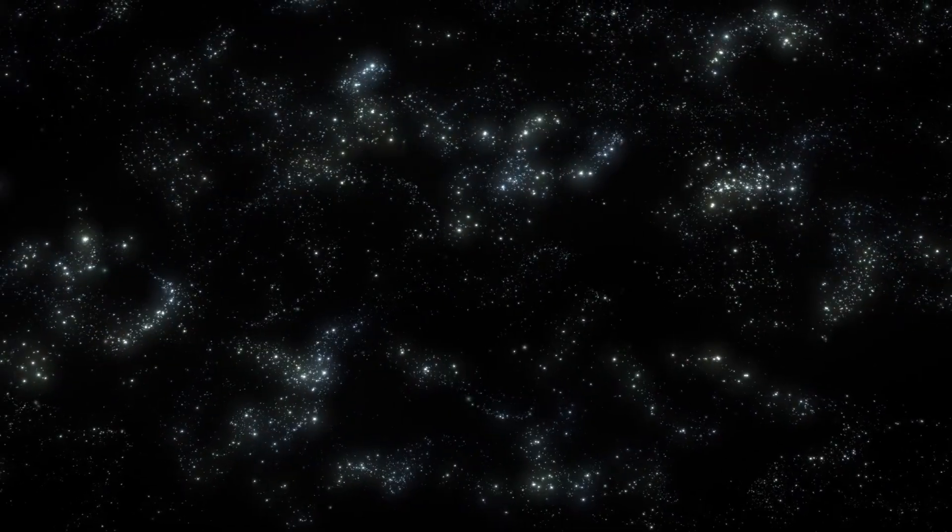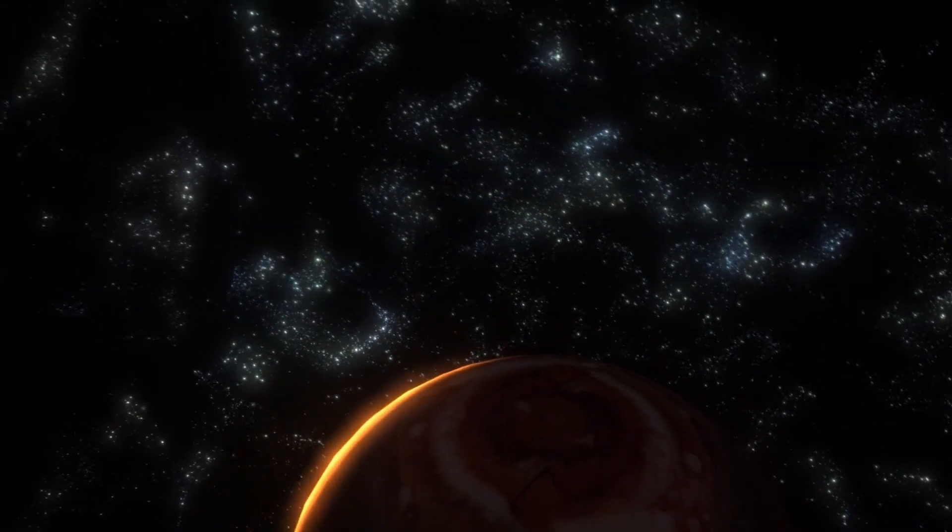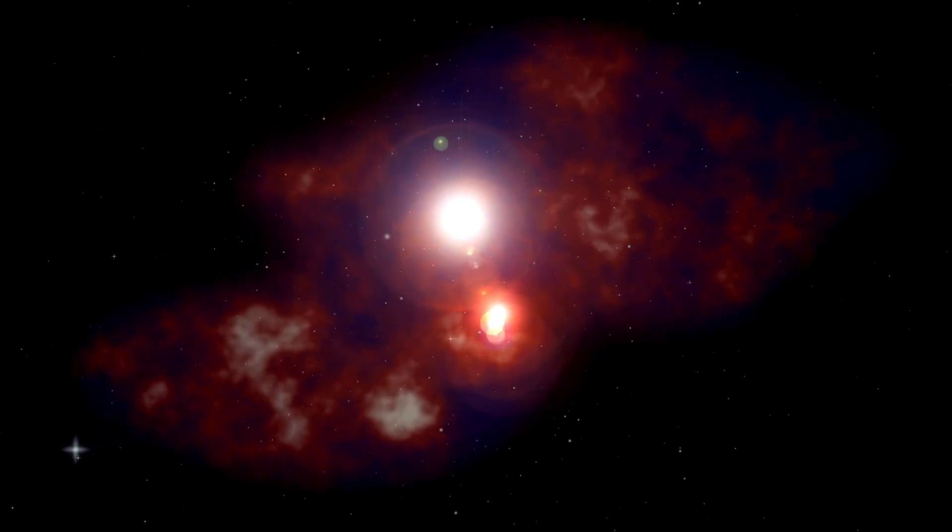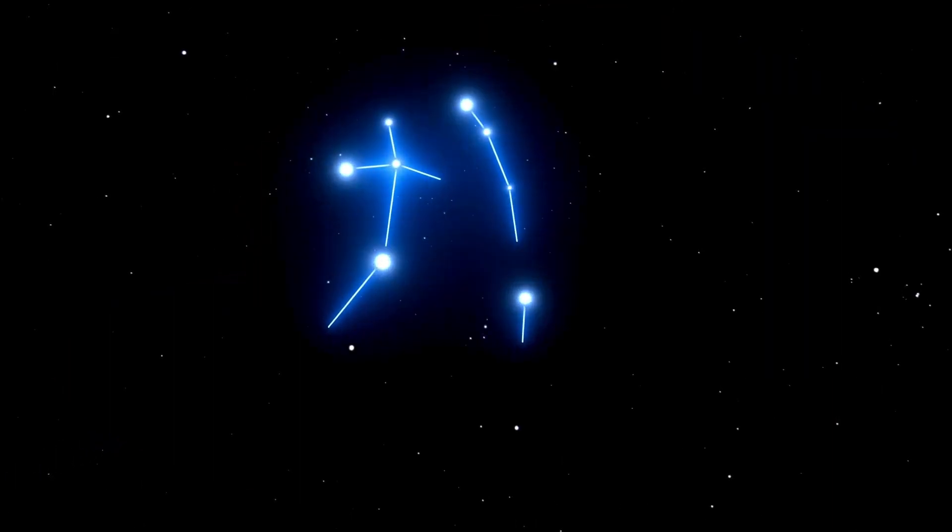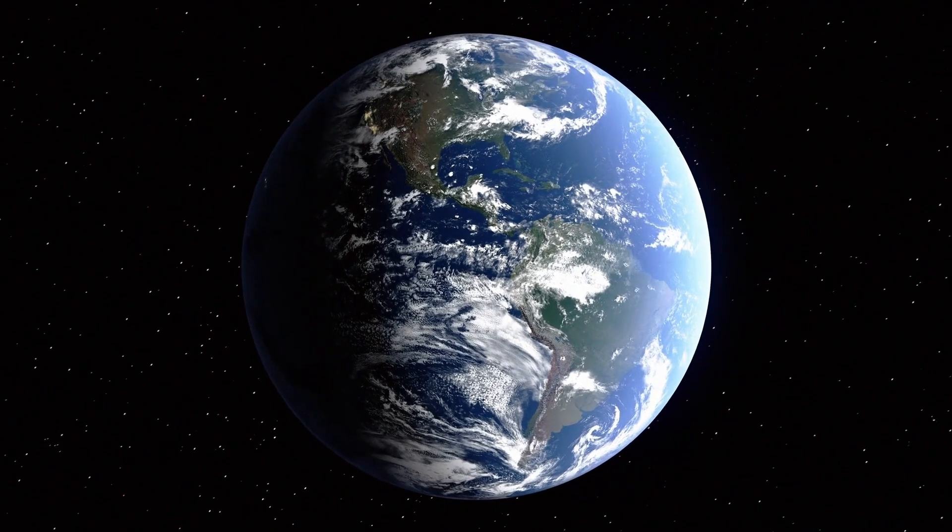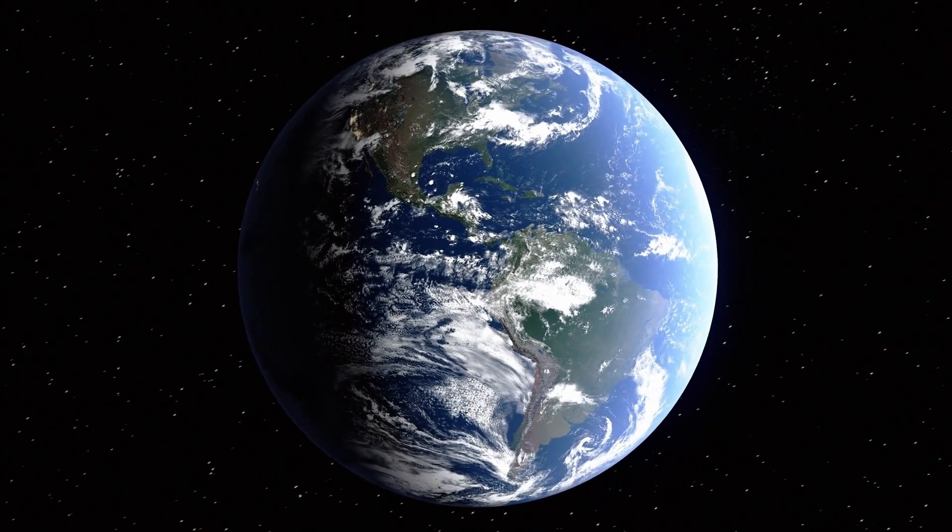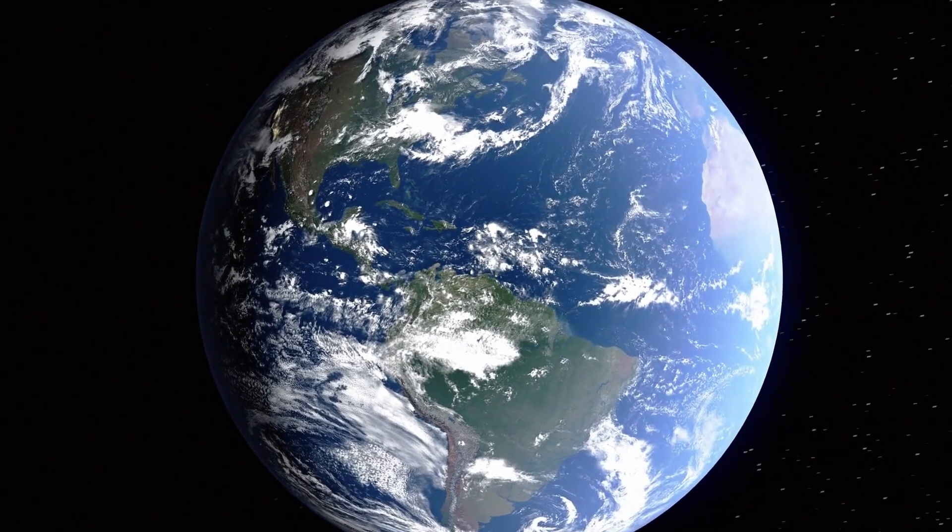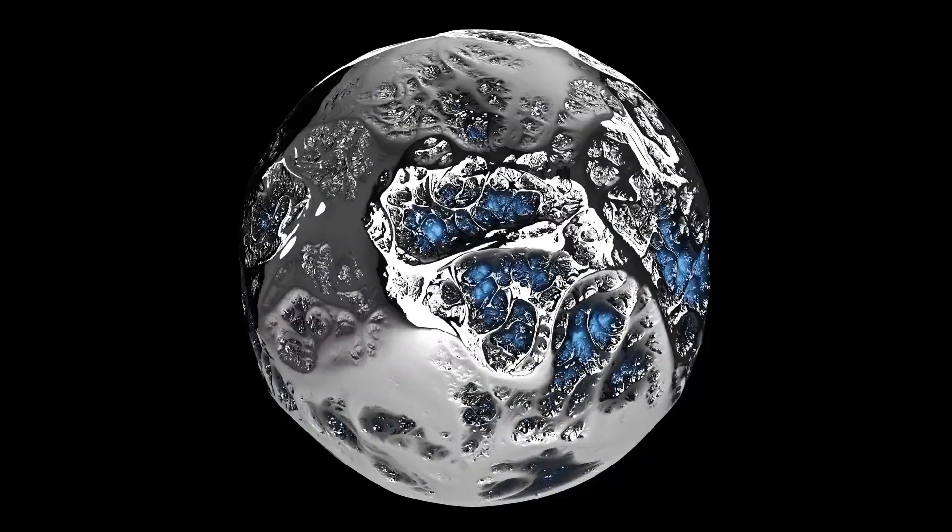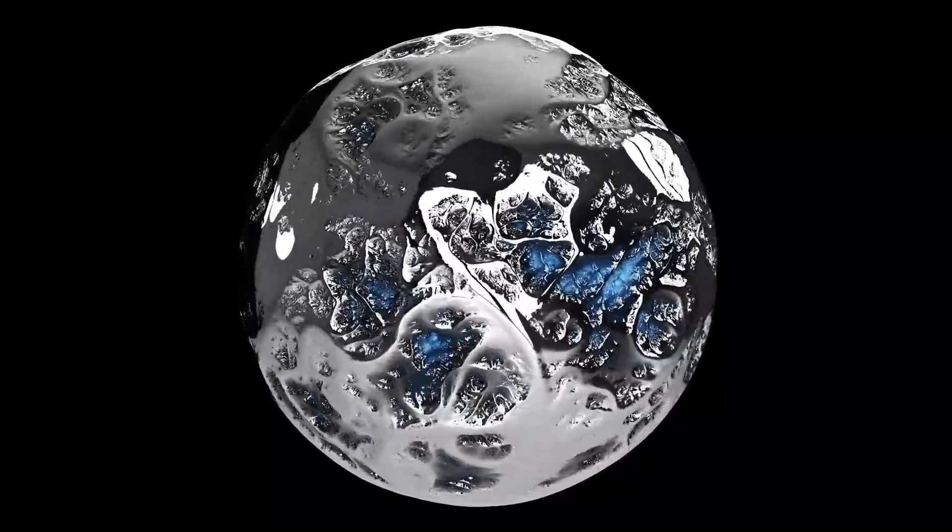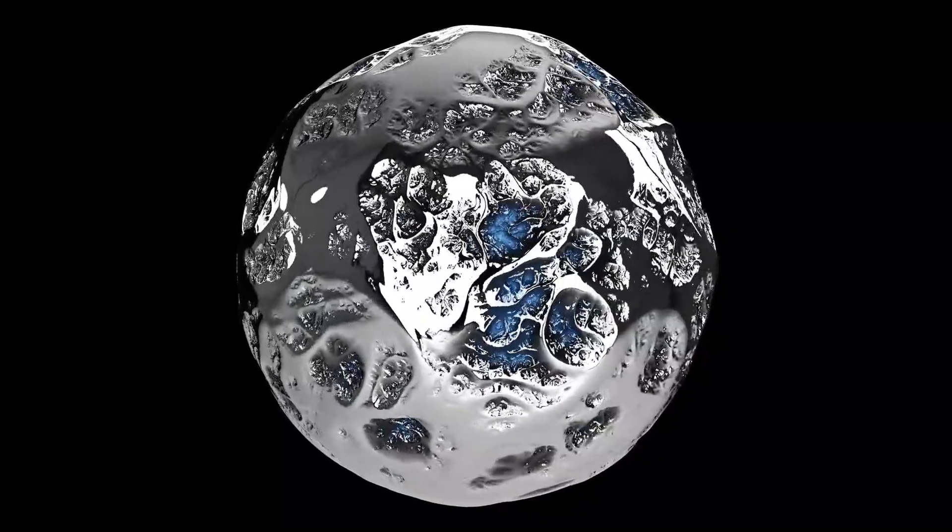It is the closest known exoplanet to our Sun, located just 4.2 light years away, a remarkably small distance when measured on a cosmic scale. Furthermore, Proxima b is part of the Alpha Centauri triple star system, which is among the brightest star systems visible in the night sky, ranking third after Sirius and Canopus. What makes Proxima b even more fascinating is the possibility that it might be habitable. It exists within the so-called habitable zone of its star, the region where conditions might be just right for liquid water and, potentially, life.